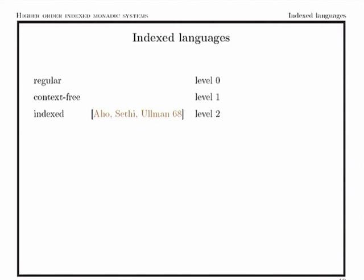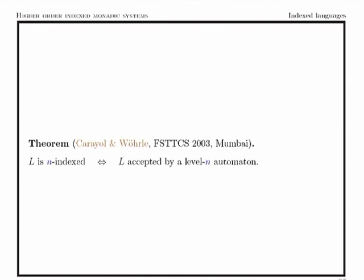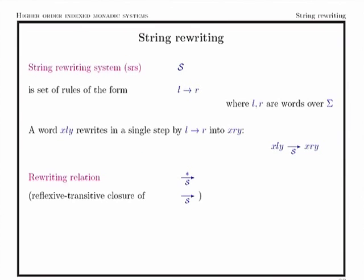The question is which kind of languages we may obtain with this kind of automata. There is a corresponding language hierarchy: level zero and one are regular and context-free languages. Level two was defined by Aho and Ullman as so-called indexed languages, and this idea was extended by Maslov to any level. He also showed that level n index languages are accepted by level n pushdown automata — for level two these are pushdown automata with stacks of stacks, for level three stacks of stacks of stacks, and so on.